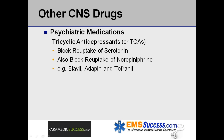Similar to selective serotonin reuptake inhibitors, tricyclic antidepressants, or TCAs, also block the reuptake of serotonin, but are less specific and also block the reuptake of norepinephrine, resulting in an increase of both neurotransmitters in the brain. Examples of common tricyclic antidepressants include Elavil, Adapin, and Tofranil.